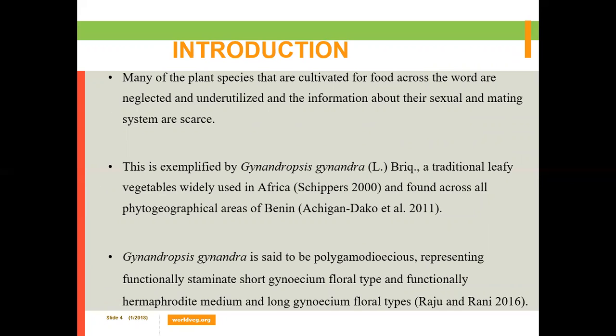Many plant species cultivated for food across the world are related, and information about the sexual and mating system is lacking. This is the case for many traditional African vegetables, and among them we have Gynandropsis gynandra, which is a traditional leafy vegetable widely used in Africa and also found across a broad geographical area of my country, Benin.